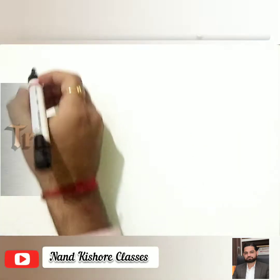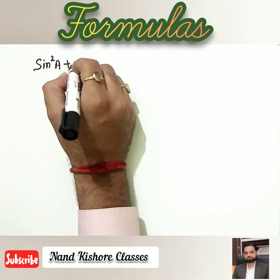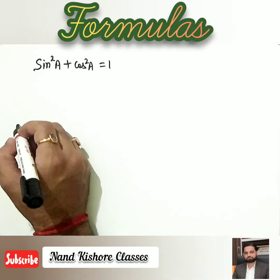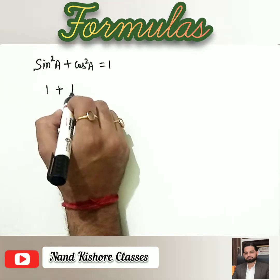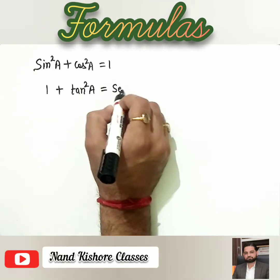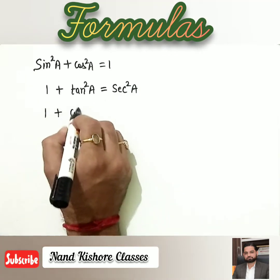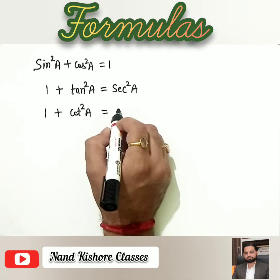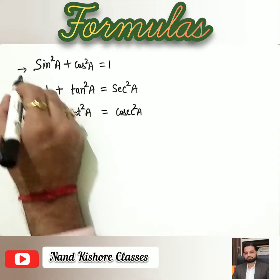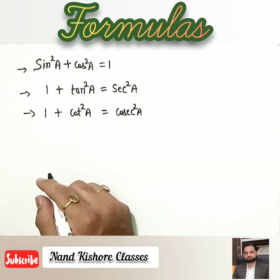The first formula is: sin²A + cos²A = 1. The second is: 1 + tan²A = sec²A. And the third one is: 1 + cot²A = cosec²A. These are the three formulas which we need to learn to solve the questions of this exercise.